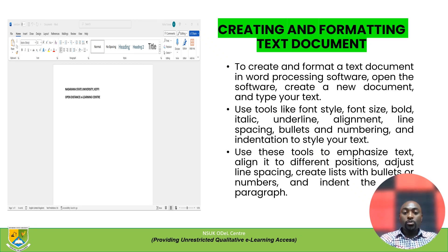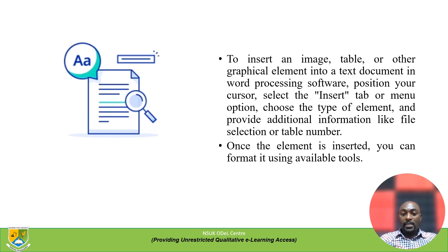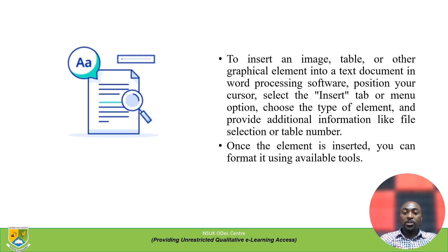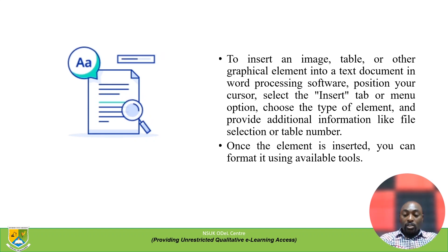The user can also use these tools to emphasize text, align it to different positions, adjust line spacing, create lists with bullets or numbers, and indent paragraphs. To insert an image, table, or other graphical element, position your cursor, select the Insert tab or menu option, choose the type of element, and provide additional information like file selection or table dimensions. Once inserted, you can format the element using the available tools within the software's graphical user interface.